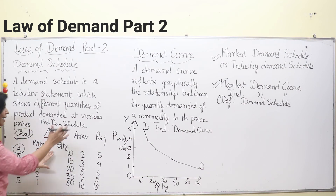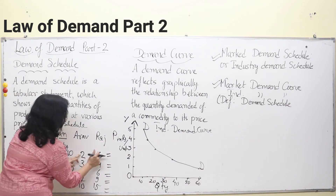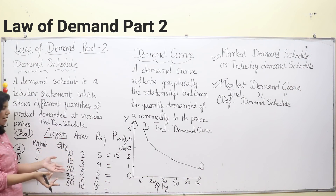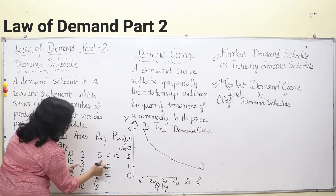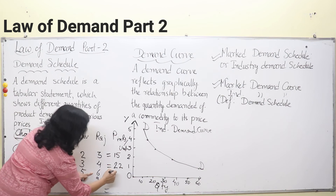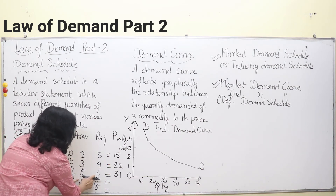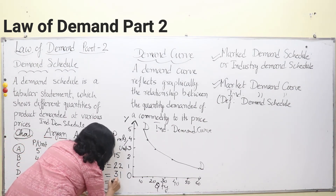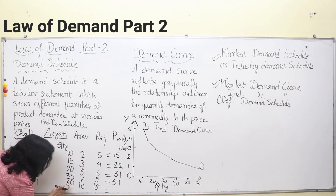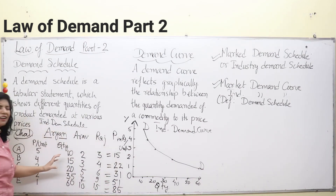To get the market demand schedule, add all individual purchases at each price. At rupees 5: 10 + 2 + 3 = 15 units. At rupees 4: 15 + 4 = 22 units (approximately). At rupees 3: approximately 31 units. At rupees 2: approximately 51 units. At rupees 1: 60 + 10 + 15 = 85 units. Please verify these additions, as small errors may exist.